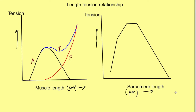The length-tension relationship explains the relationship between the length of the muscle and the tension in the muscle. Before we proceed, we should understand that there are two types of tension: passive tension and active tension. Passive tension is when we change the length of the muscle and it is held at that length even without stimulation — that is, it's not contracting.